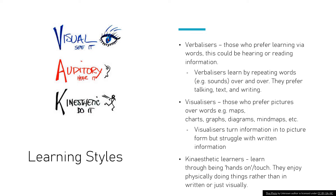The idea of learning styles was that you should be taught in your preferred learning style — so if you see yourself as a visual learner, all information should be presented visually. But actually that's not the case; it doesn't help learning. There's even an argument that if that is your preferred style, you need to learn in other styles too, since you're already good at that one. Some say you should go against your learning style.